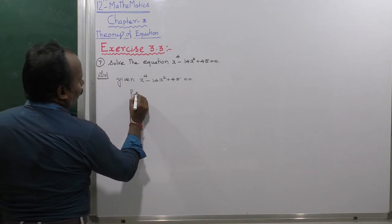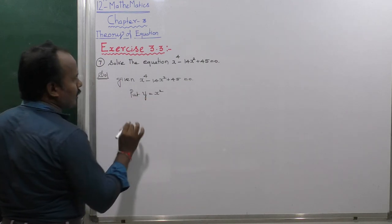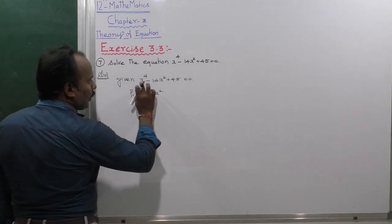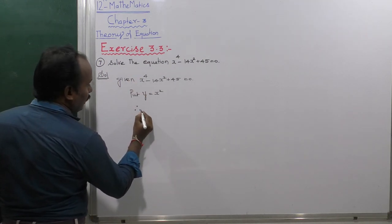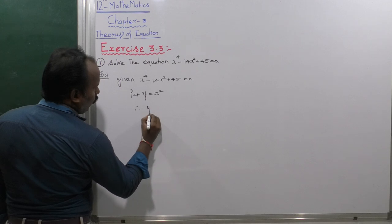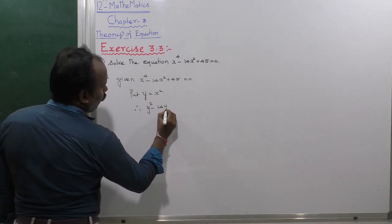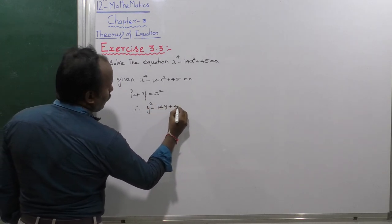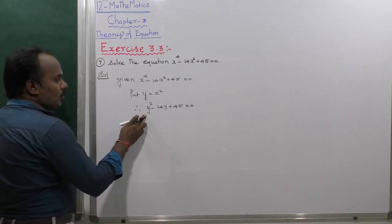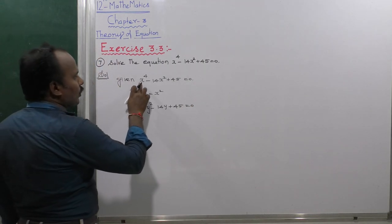We put y equal to x square, replacing x square with y. So therefore the given equation becomes y square minus 14 y plus 45 is equal to 0, which is a quadratic equation.